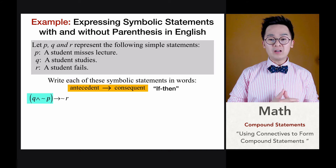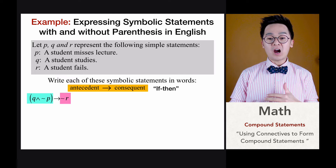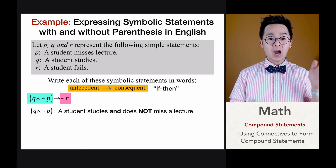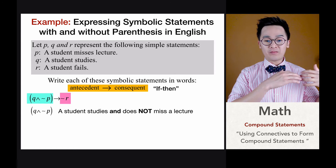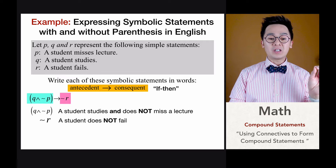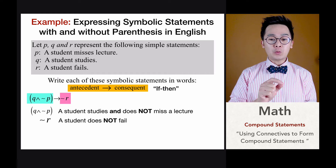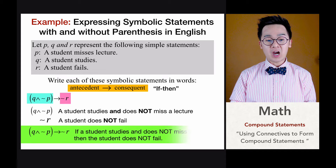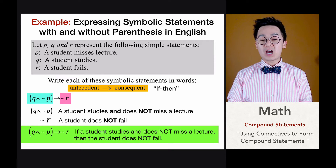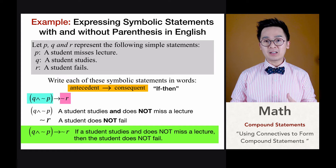Grouping the antecedent and consequent together: the consequent is ¬R (not R). Translating the parentheses gives us 'a student studies and does not miss a lecture,' which is the English translation of the antecedent. The consequent ¬R is simply 'a student does not fail.' Putting it all together: Q∧¬P → ¬R translates to 'if a student studies and does not miss a lecture, then the student does not fail.'